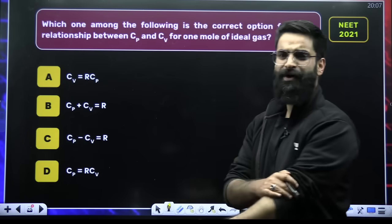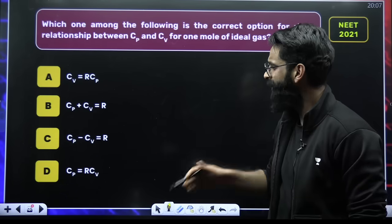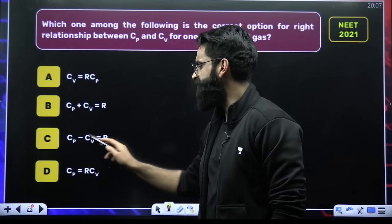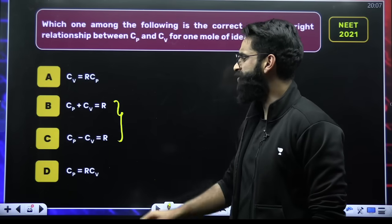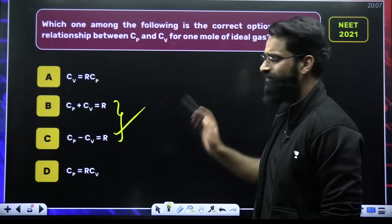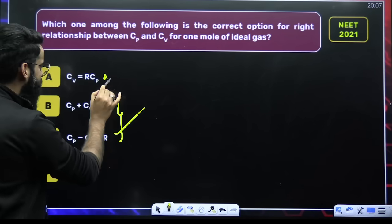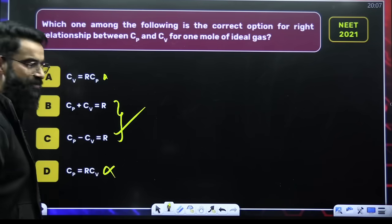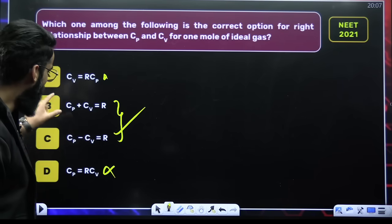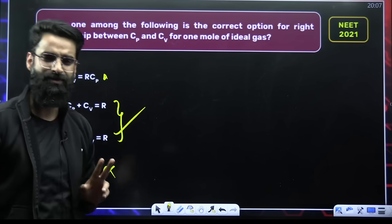Similarly, look at this particular question. I'm just looking at the options: CP + CV = R and CP − CV = R. The only difference lies in the sign. So among these two options B and C, there is one that is going to be correct. I have nothing to do with options A or D. So the correct answer is going to be among B and C.